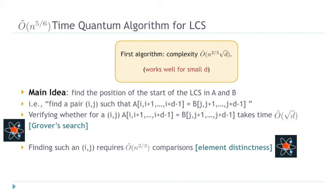We can then reduce the problem to element distinctness. Put every substring of size D from the first string into a list X, and every substring of size D from the second string into a list Y. We want to know if there is one element shared between X and Y — that we can do in time n^(2/3). But on top of that, we have to pay a cost for comparing elements, which is √D. So the overall runtime combining both algorithms is n^(2/3) · √D.